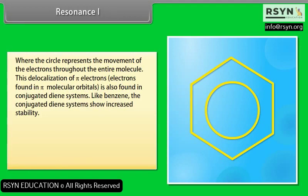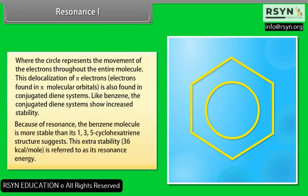The circle represents the movement of electrons throughout the entire molecule. This delocalization of pi electrons — electrons found in pi molecular orbitals — is also found in conjugated diene systems. Like benzene, conjugated diene systems show increased stability because of resonance. The benzene molecule is more stable than its 1,3,5-cyclohexatriene structure suggests. This extra stability of 36 kilocalories per mole is referred to as its resonance energy.